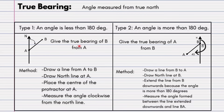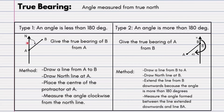For Type 1, the question says: give the true bearing of B from A. The word 'from A' tells us the north line must be drawn from point A. The method is: draw a line from A to B, then draw a north line at A — just a straight line at point A. Next, place a protractor with its center directly at point A and measure the angle clockwise from the north line.